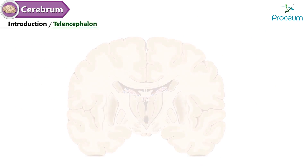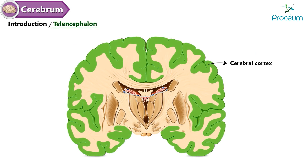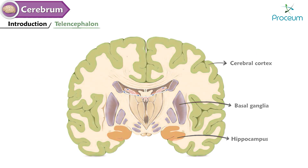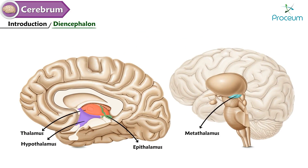The telencephalon refers to the region of the brain that includes the cerebral cortex and several subcortical structures, including the hippocampus and the basal ganglia. The diencephalon consists of the thalamus, hypothalamus, epithalamus, and metathalamus.